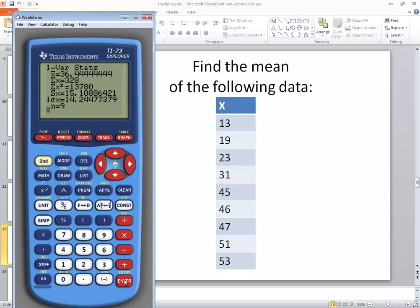Now it assumes L1. So if you put your numbers in a different list, then you'd have to put the appropriate ones, but just always put them in L1 and you'd be fine.